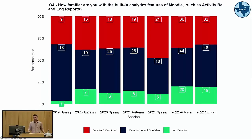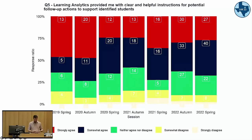We're thinking about how to develop more customised enhancements within learning platform tools that are already at academics' fingertips, rather than requiring another system to log into. How can we embed analytics into their existing processes? The last quantitative question asks whether the reports provide clear and helpful instructions for follow-up actions to support students. The agreement rate is about 74%, but there is still opportunity to provide more support on how to take action, which will grow as demand for automated student interventions increases.